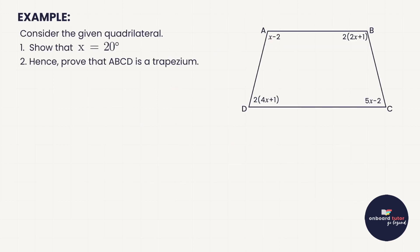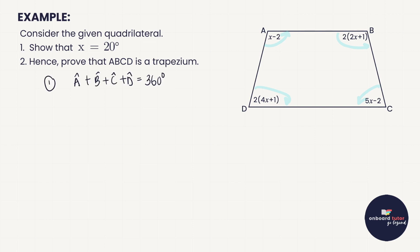Let's take a look at an example. Consider the given quadrilateral — four sides, so it's a quadrilateral. It definitely looks like a trapezium but let's not assume. Show that x is equal to 20 degrees, and hence use what we've proven to prove that ABCD is a trapezium. In order to show x equals 20 degrees, we need to know something about the interior angles of a four-sided shape.